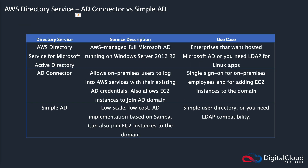So just to help you understand the differences: the key ones to remember are the Directory Service for Microsoft AD — the one with lots of features, a bit more expensive. Then you've got the AD Connector — remember, the Microsoft AD is a fully managed service on AWS, whereas with AD Connector it's when you have your own on-premises Active Directory and you want to authenticate to AWS. And then at the bottom we have Simple AD, which is a low-cost version of the Microsoft AD — it has fewer features but it is cheaper.